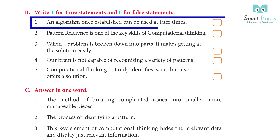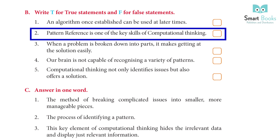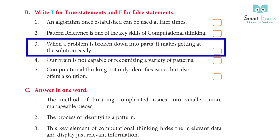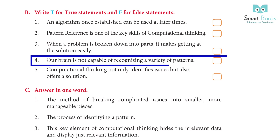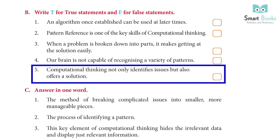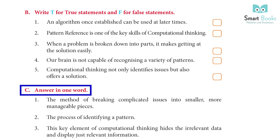B) Write T for true and F for false: 1) An algorithm, once established, can be used at later times — answer: False. 2) Pattern recognition is one of the key skills of computational thinking — answer: False. 3) When a problem is broken down into parts, it makes getting at the solution easily — answer: True. 4) Our brain is not capable of recognizing a variety of patterns — answer: False. 5) Computational thinking not only identifies issues but also offers a solution — answer: True.